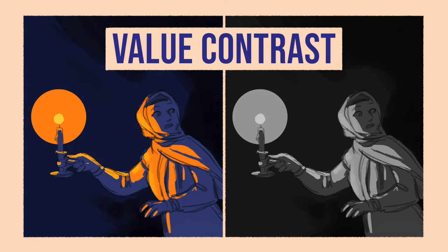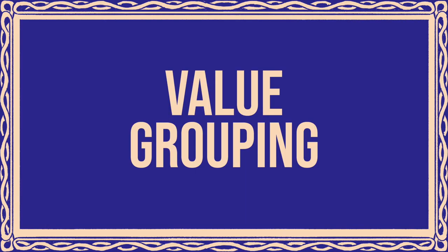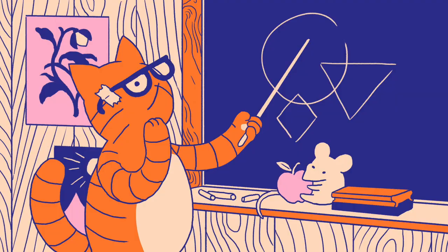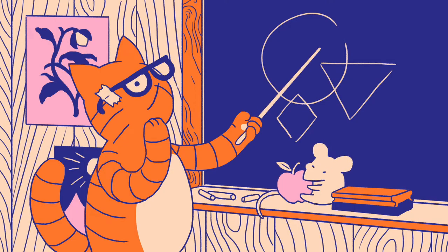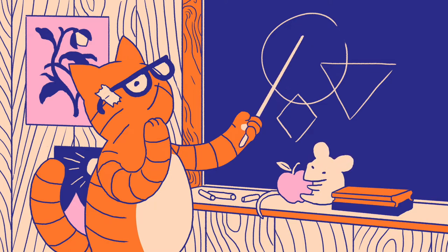That's why planning out your illustration in terms of values before considering colour can save you a lot of time. Value grouping is an effective way to add as many details to an illustration as you'd like, without making things look cluttered, confusing or distracting.